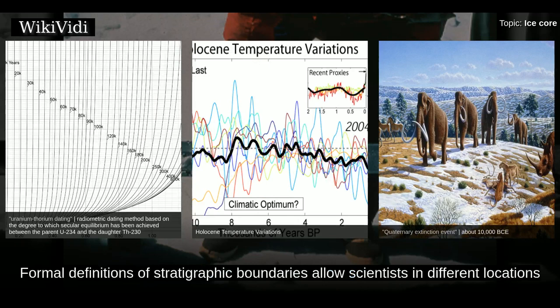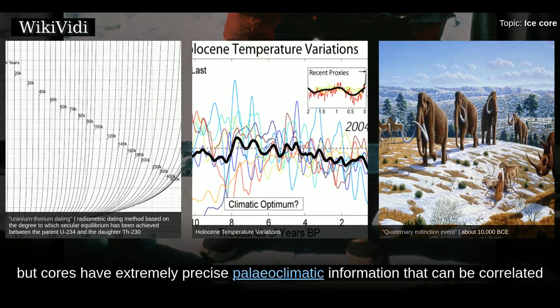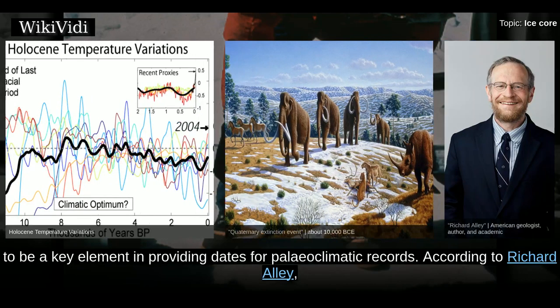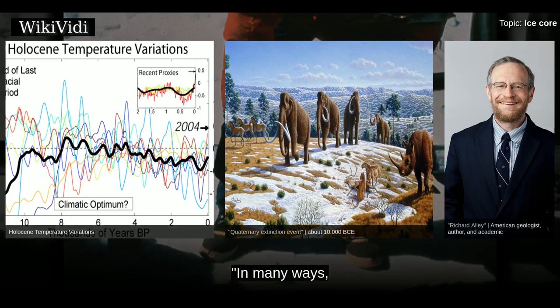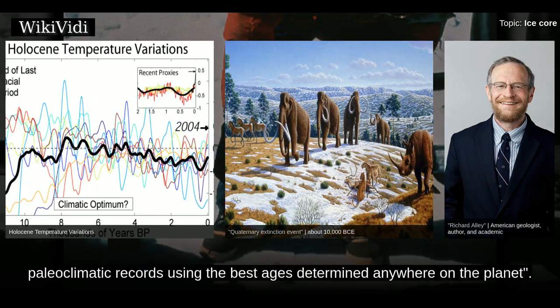Formal definitions of stratigraphic boundaries allow scientists in different locations to correlate their findings. These often involve fossil records which are not present in ice cores, but cores have extremely precise paleoclimatic information that can be correlated with other climate proxies. The dating of ice sheets has proved to be a key element in providing dates for paleoclimatic records. According to Richard Alley, in many ways ice cores are the Rosetta Stones that allow development of a global network of accurately dated paleoclimatic records.